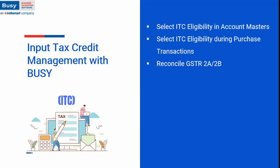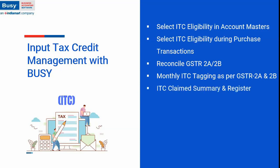You can get mismatch reports through the reconciliation option in BUSY. For monthly ITC tagging as per 2A and 2B, BUSY has an auto-download option. Once you download the 2A and 2B data, you can claim the input tax credit on purchase transactions that have been matched with your supplier — meaning you recorded a purchase in BUSY and your supplier also filed the same in GSTR-1. An ITC claim summary register shows only the transactions where you have claimed input tax credit.